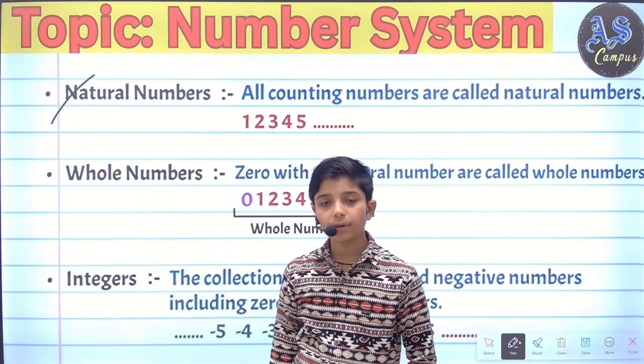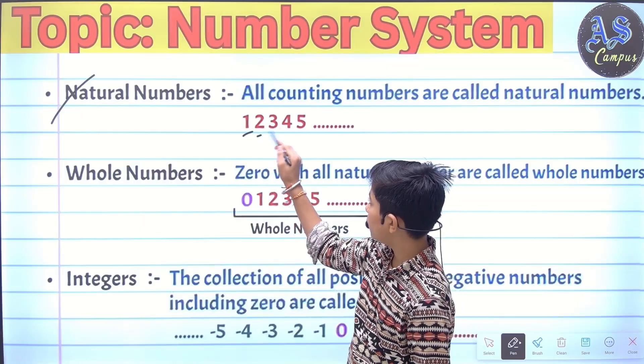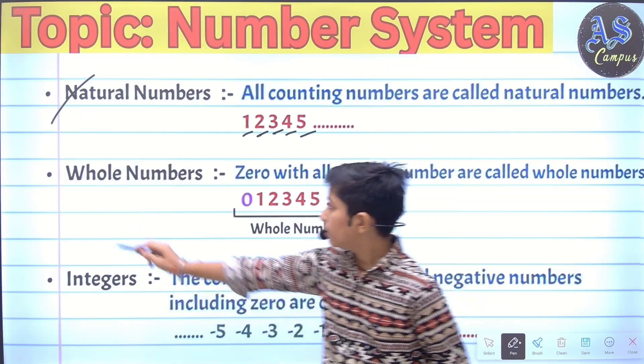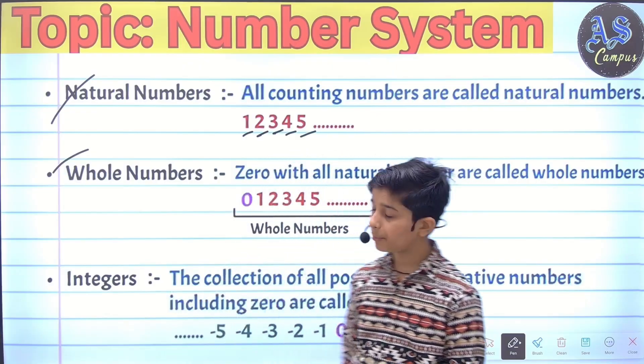Natural numbers: All counting numbers are called natural numbers. Example: 1, 2, 3, 4, 5 to infinite. Whole numbers: All natural numbers including zero are called whole numbers. Example: 0, 1, 2, 3, 4, 5 to infinite.